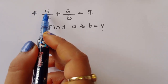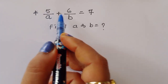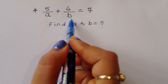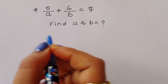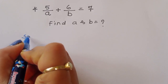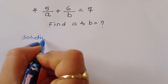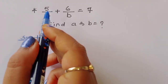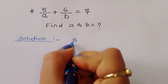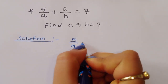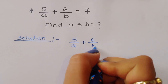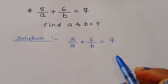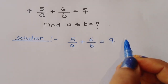The question is: 5 upon A plus 6 upon B is equal to 7. We have to find out the value of A and B. Let's see the solution. This is the given question and we can do one thing here.